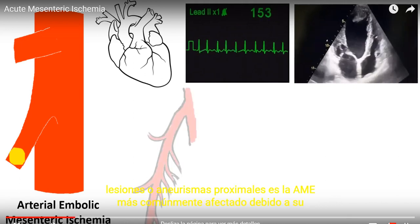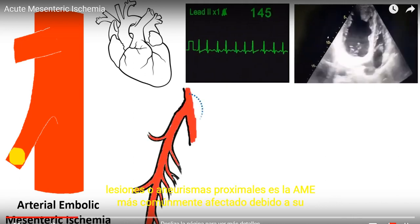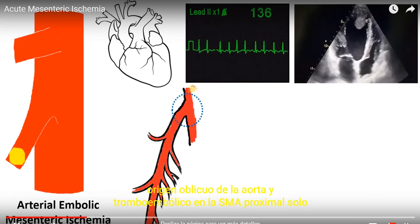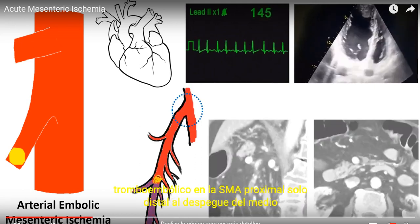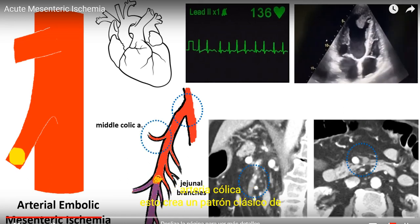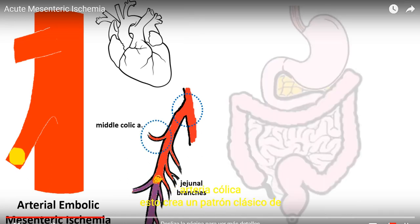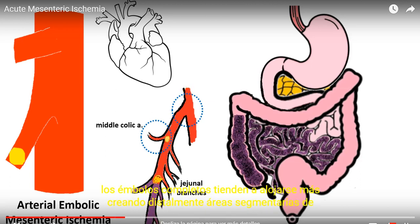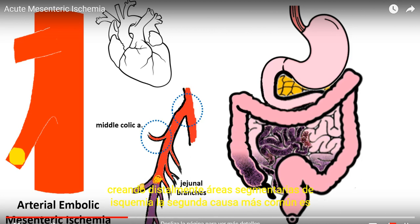The SMA is most commonly affected because of its oblique origin from the aorta, and thromboemboli often lodge in the proximal SMA just distal to the takeoff of the middle colic artery. This creates a classic pattern of ischemia that spares the first portion of the jejunum and part of the colon. Atheroemboli tend to lodge more distally, creating segmental areas of ischemia.